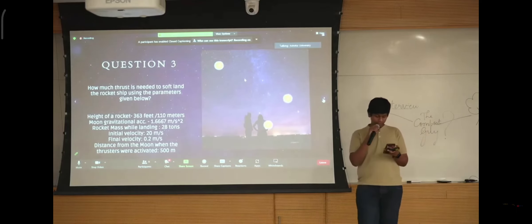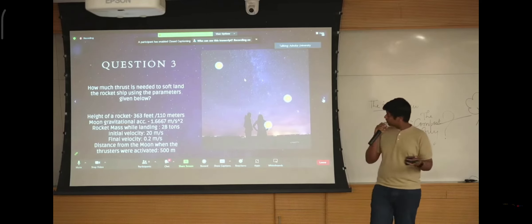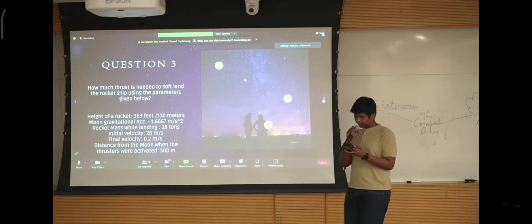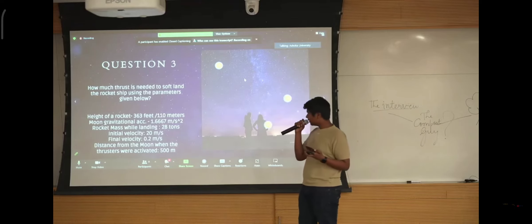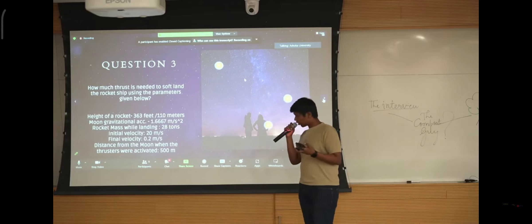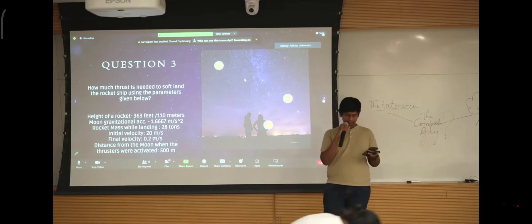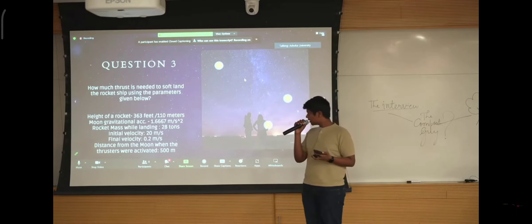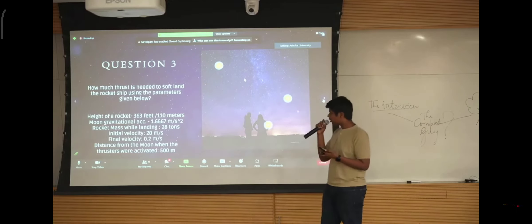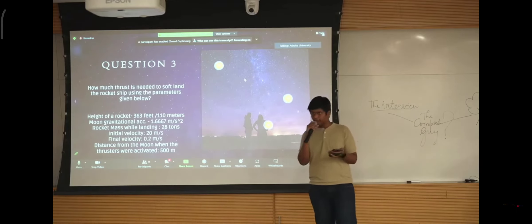So as we know, the spacecraft from the summary, this spacecraft crashed. So how much thrust is required for soft landing of the rocket? So these are the parameters given below. The height of the rocket is around 110 meters. The moon's gravity acceleration is 1.667. The mass of the rocket is 28 tons, which is around 25,400 kgs. The initial velocity is 20 meter per second. The final velocity is 0.2 meter per second. And the distance from the moon when thrusters were activated are 500 meters.